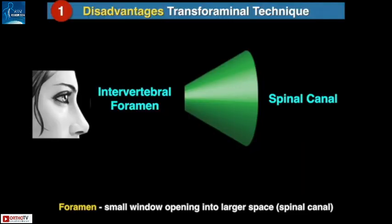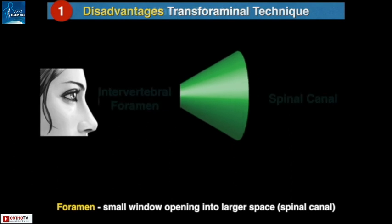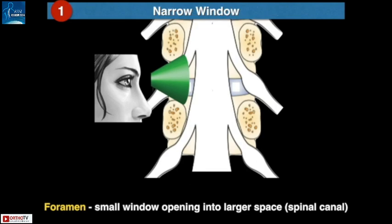There are two techniques available: transforaminal and interlaminar technique. Transforaminal technique is a great technique and is always my first choice whenever I think of endoscopy, because it is more minimally invasive than the interlaminar technique. But there are certain disadvantages associated with it.